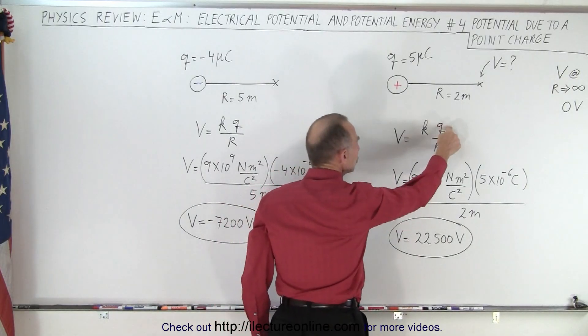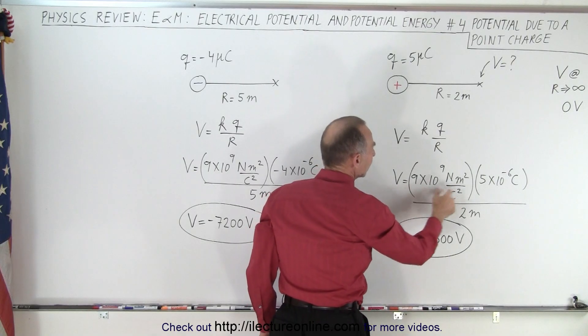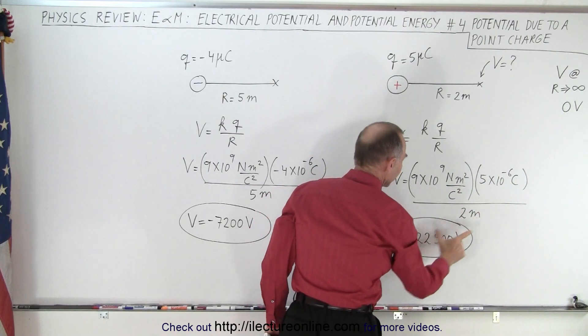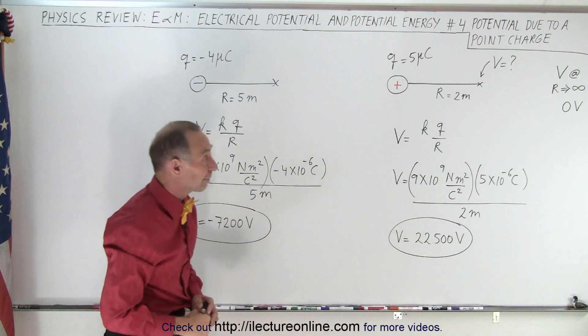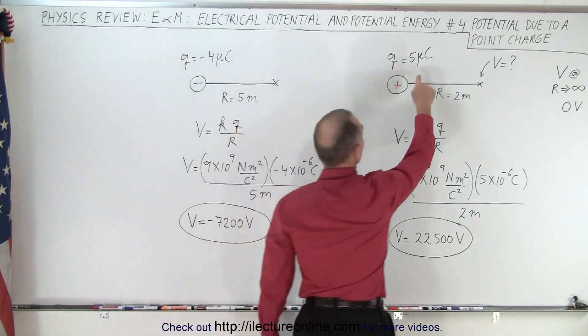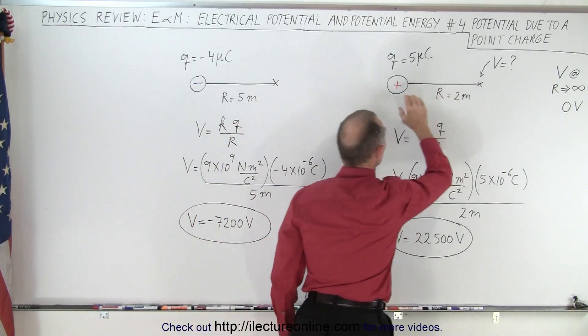The equation is kq over r, so k times the charge divided by distance, and in this case, we get a positive 22,500 volts for a 5 microcoulomb charge to be 2 meters away from a 5 microcoulomb charge.